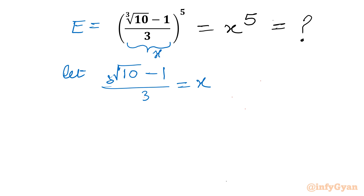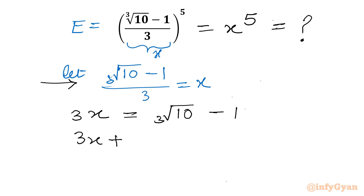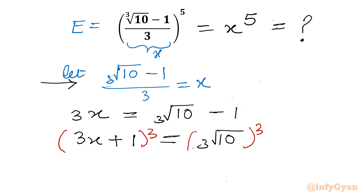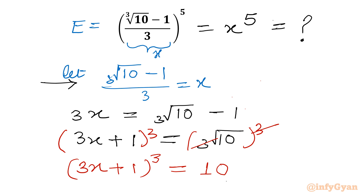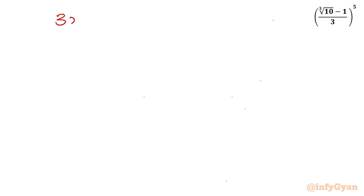Now let's cross multiply our substitution. So I can write 3x equal to cube root 10 minus 1. Add 1 to both sides: 3x plus 1 equal to cube root 10. Consider cubing both sides — the cube root and cube will cancel. So it is left (3x plus 1) whole cube in the LHS, and in RHS it is only 10. Now we will use one algebraic identity. Let me write (3x plus 1) whole cube equal to 10.